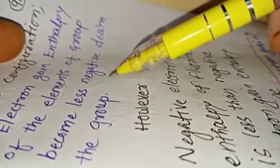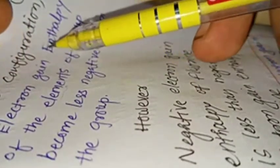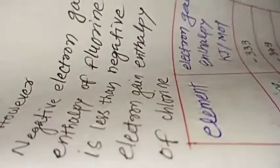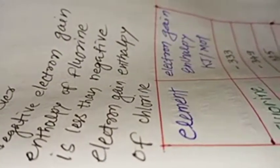Electron gain enthalpy of the elements of the group becomes less negative down the group. So if we go down the group, the electron gain enthalpy becomes less and less negative. However, it is important to note, my dear students, please note it well: the negative electron gain enthalpy of chlorine is greater than the negative electron gain enthalpy of fluorine. Now this is interesting. If we go down the group, the electron gain enthalpy is becoming more and more positive. Why does it happen? That is what we need to understand now.